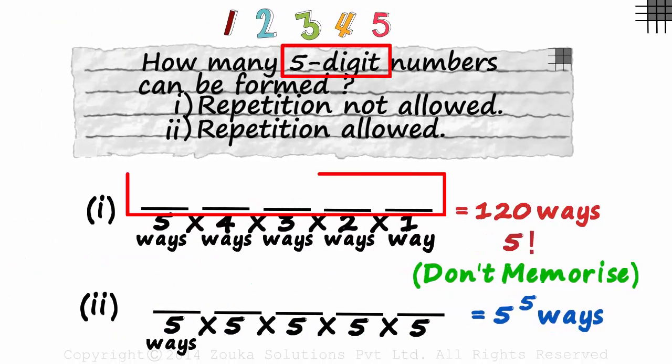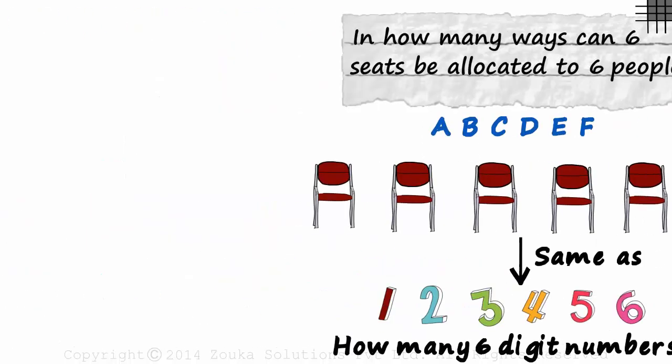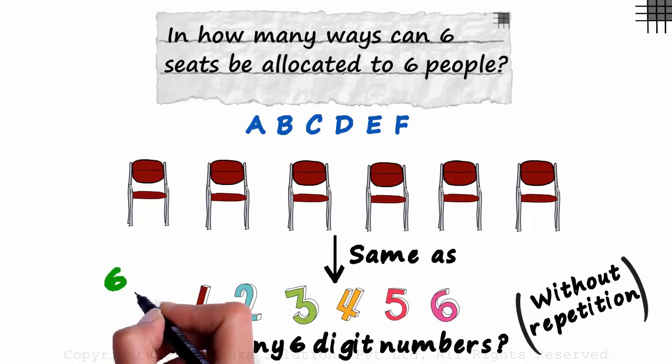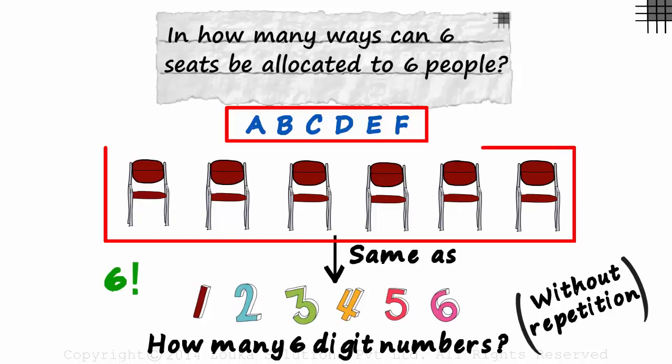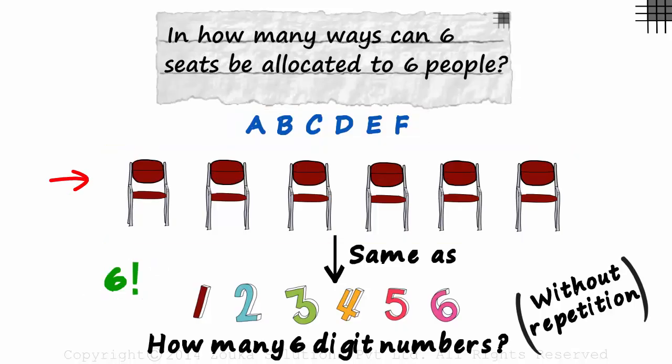Five digits in five slots when repetition is not allowed is this case: five factorial. Going back to the current problem, the answer to it will be six factorial. Six people can be arranged on six seats in six factorial ways. Here we have assumed that the seats are in a row. The answer will be different if the seats are arranged in a circular fashion. Don't worry about it for now. We have covered circular arrangements in another session.